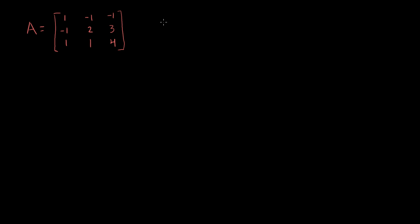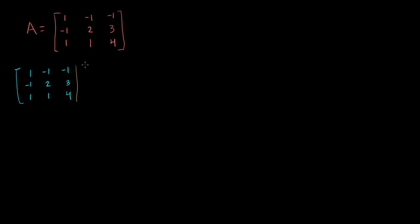I'll create an augmented matrix here. First I'll write A: 1, minus 1, minus 1. Then minus 1, 2, 3. And then I will augment it with the identity matrix: 1, 0, 0 / 0, 1, 0 / 0, 0, 1.